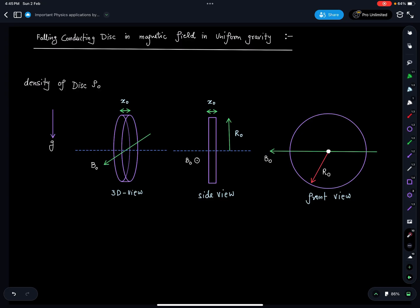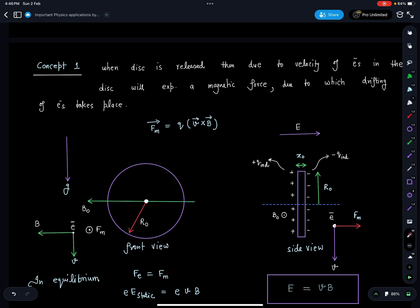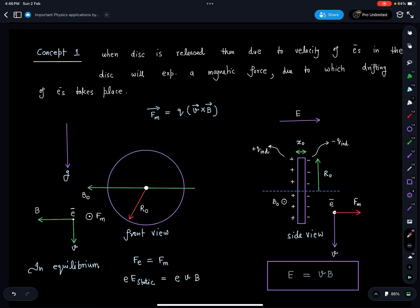Concept 1: Once we release this disk in uniform magnetic field, due to gravity some velocity will come into the disk and the free electrons inside will experience a magnetic force q·(v×B), due to which drifting of electrons will take place. This is Hall's effect, similar to what we study in motional induced EMF where we have derived the result E = BvL. We check that on each electron, the magnetic force q·(v×B) is acting due to which electrons will start drifting.